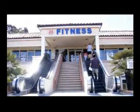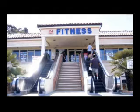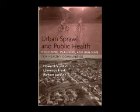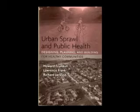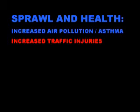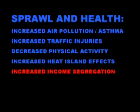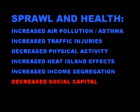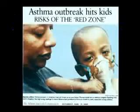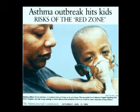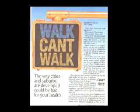That gets into the whole society we've created and the health problems — the fact that we no longer have a reason to live actively. Planning for Health Now is outlined in a great book by Howie Frumkin, Larry Frank, and Dick Jackson that points out all the ways we're actually killing ourselves with the design of our communities: increased air pollution and asthma, traffic injuries, decreased physical activity, heat island effects, income segregation and decreased social capital, negative mental health impacts, and the correlation of asthma in cities to where highways are located.